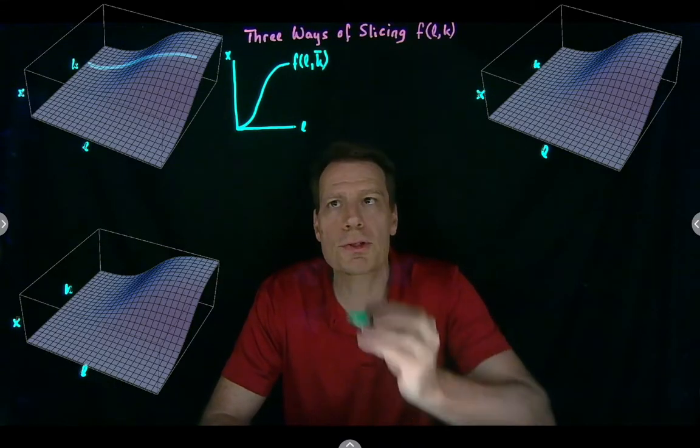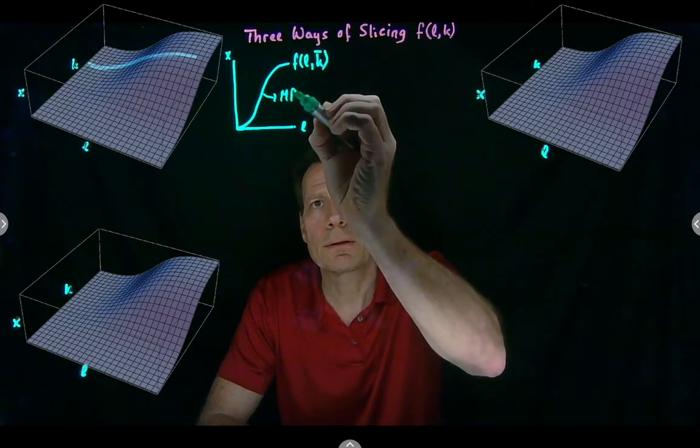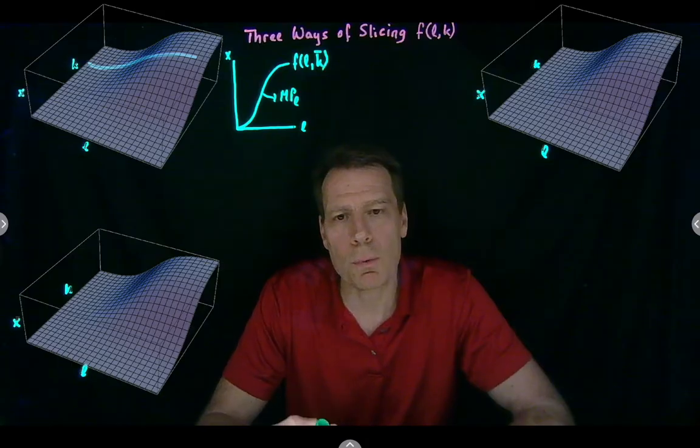We then found that the slope of this function is the marginal product of labor. The additional output we get from hiring one more worker without changing how much capital we have.